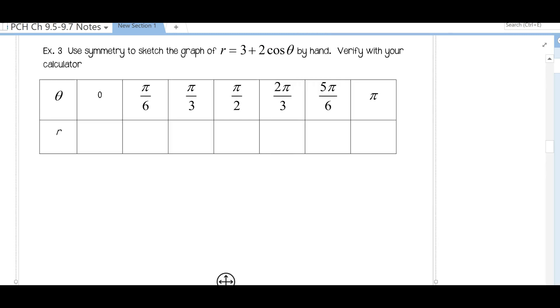The first thing we notice is that we have cosine theta here. This cosine theta tells us that we have symmetry with respect to the polar axis, and as I go through graphing this I'm going to point out how we can use this to help us. We're going to look at points from zero to pi and figure out what radius goes with those. Let's start substituting those in.